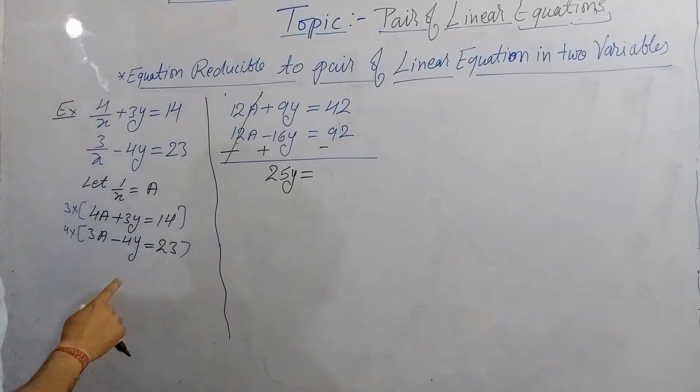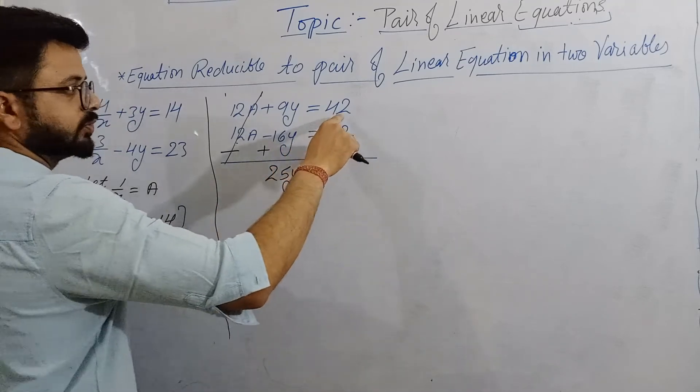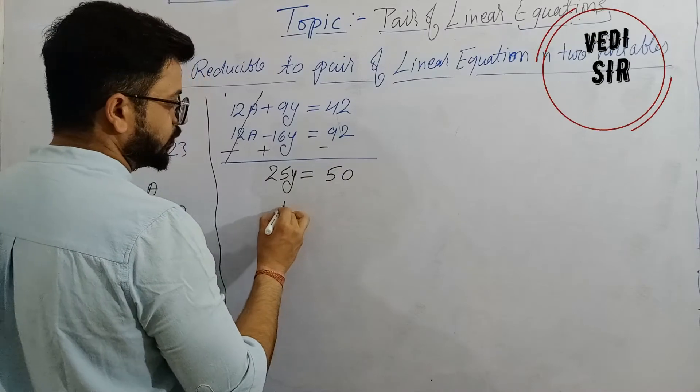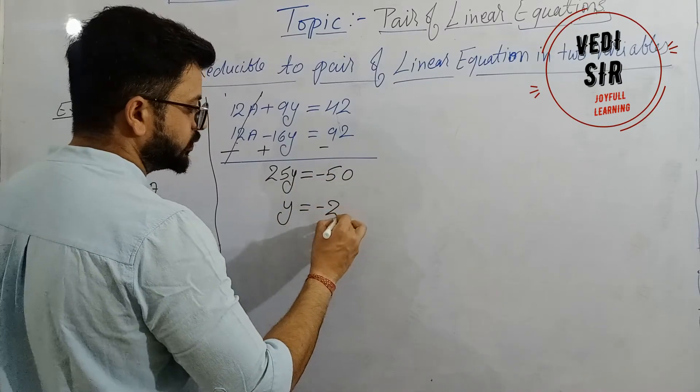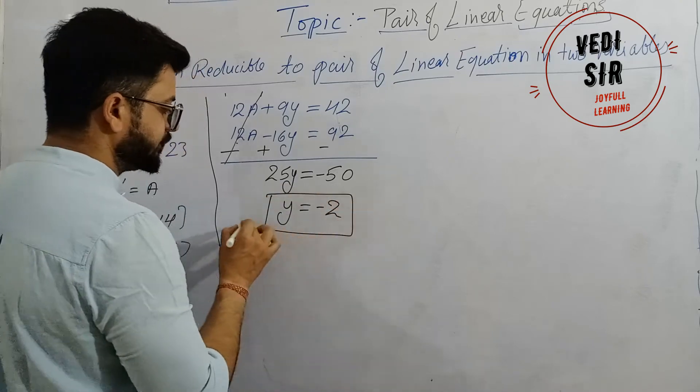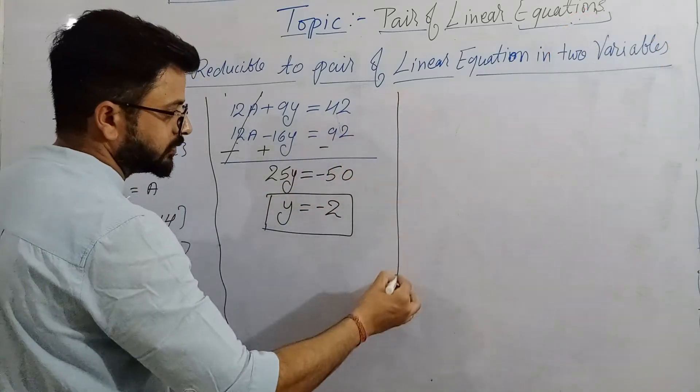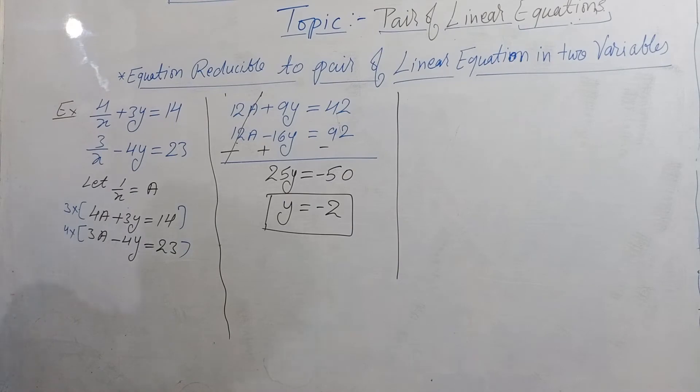25Y is equal to from minus 92 and plus 42 we are subtracting, from minus 92 then 50 will be there, so minus 50. Sorry, Y will be minus 2.